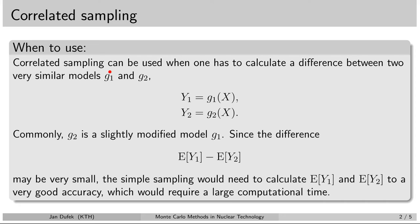Let's denote the first system as G1, so G1 is a function that describes the first system. The second system is described by the G2 function. Because they are a little bit different, they also produce different results. The result Y1 describes the first system, and the result Y2 describes the outcome of the second system. So we want to calculate the difference, which very often happens when we want to know the effect of some small change in the system on the result.